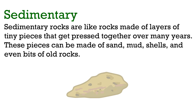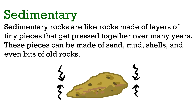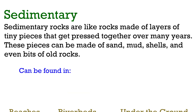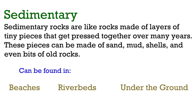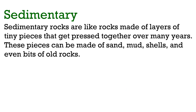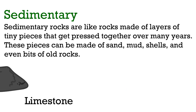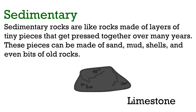Lastly, we have sedimentary rock. Sedimentary rocks are rocks made of layers of tiny pieces that get pressed together over many years. These pieces can be made of sand, mud, shells, or even bits of old rocks. They can be found in places like beaches, riverbeds, and under the ground. An example of sedimentary rock is limestone.